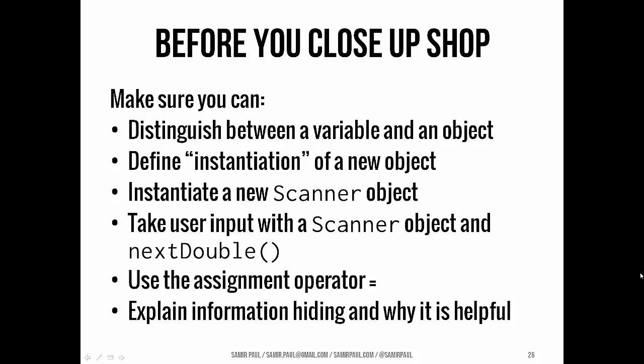Okay. So before you close up shop, couple of things I want to make sure you understand. Go back through and look at the slides, go back through and re-listen to the video. If you need clarification, we want to make sure you can distinguish between a variable and an object. I want to make sure you can understand and define what instantiation is when you instantiate a new object. I want to make sure you can actually instantiate a new scanner. We want to take user input with a scanner object and the next double method. I want to make sure you can use the assignment operator and tell me what's information hiding and why is it helpful? So I would encourage you take a look back through these slides, download the convert code, open it up in Eclipse and run it for yourself and we'll see you next class.